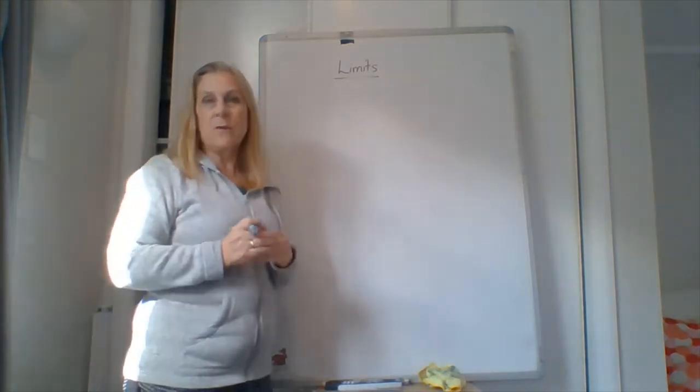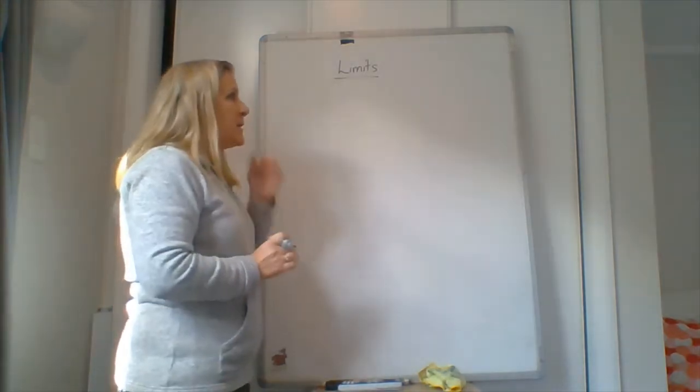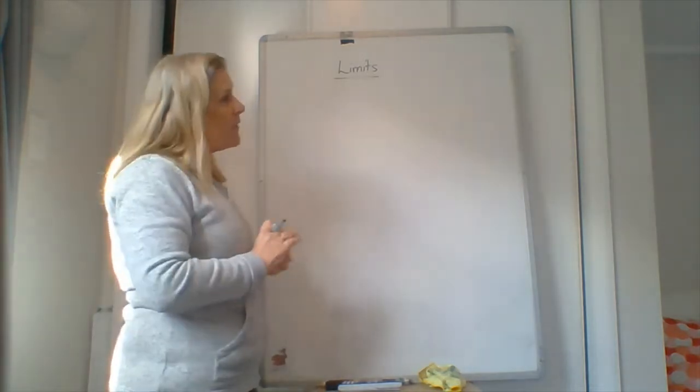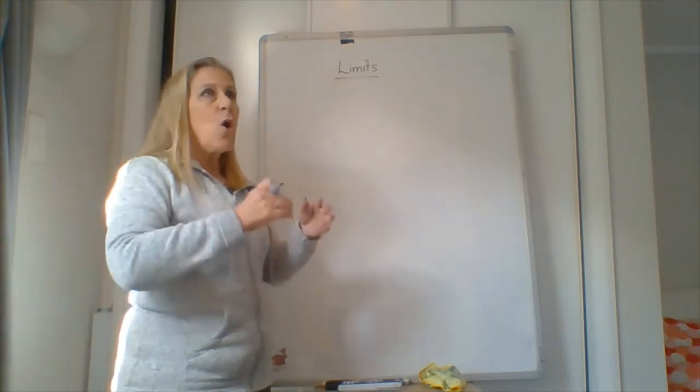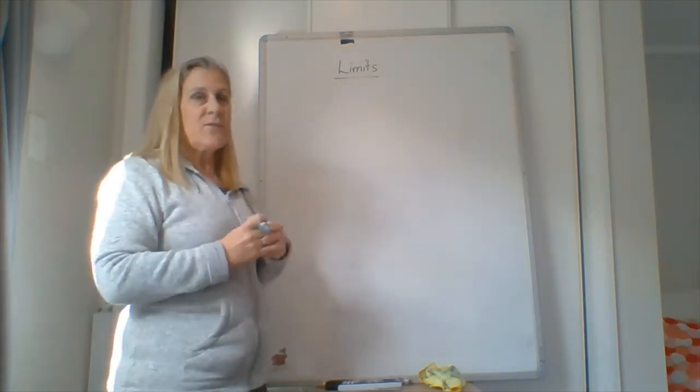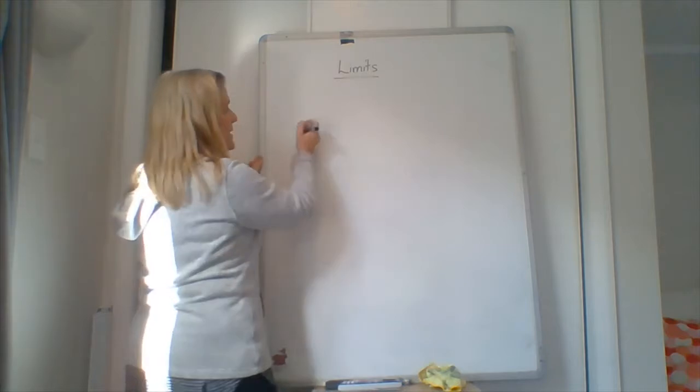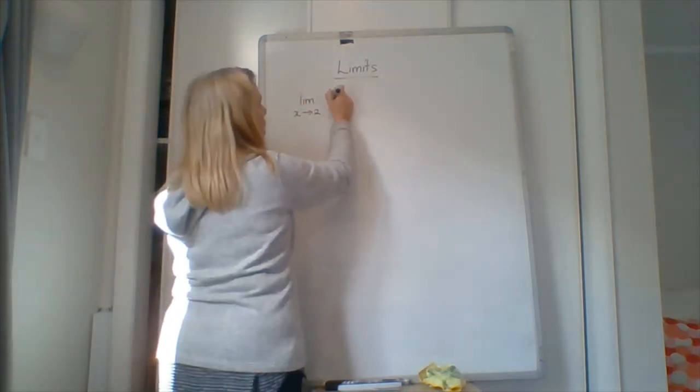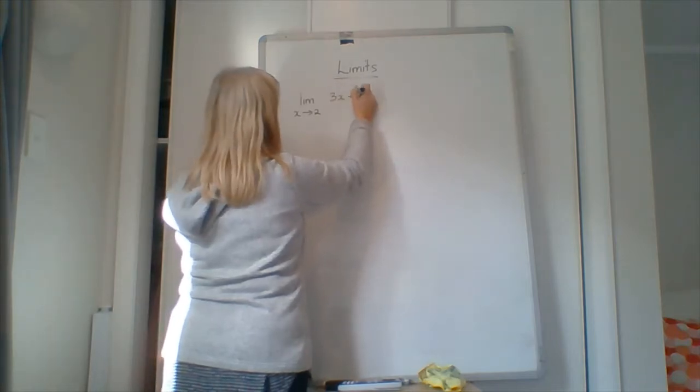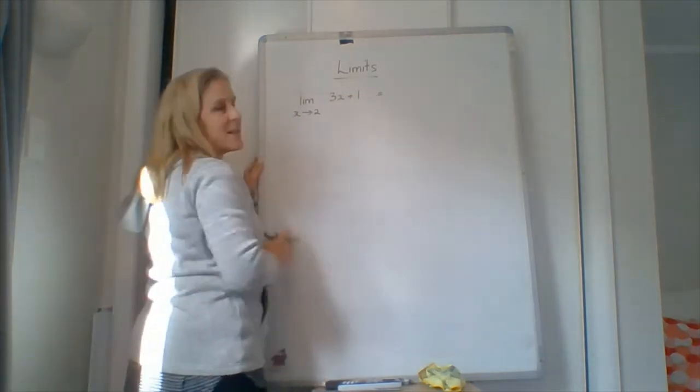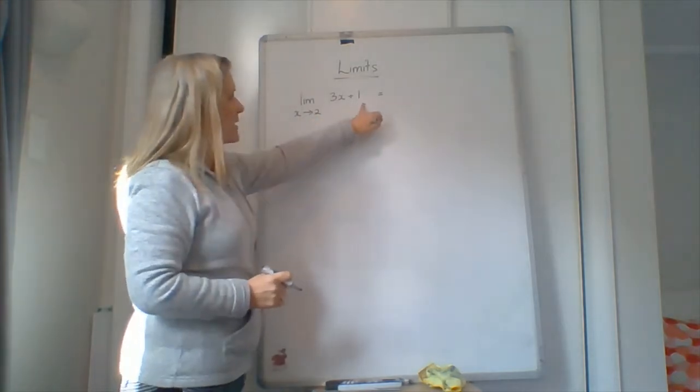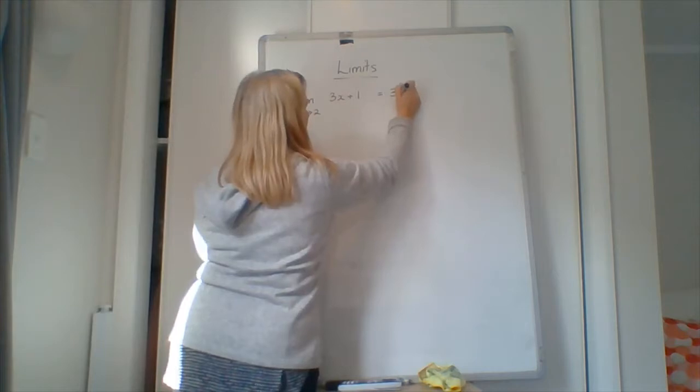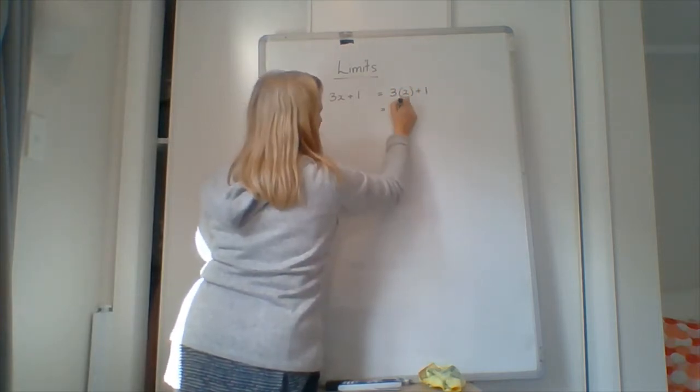So there are two parts to limits that we have to know about. One is graphical and one is numerical or algebraic. What we're actually trying to do is we're trying to find out what the value of something is in a function. So it's really easy, it's written like this: the limit as x approaches 2 of 3x plus 1. Really all that's saying is what is the value of this function when x equals 2? So it would be 3 times 2 plus 1 is 7.